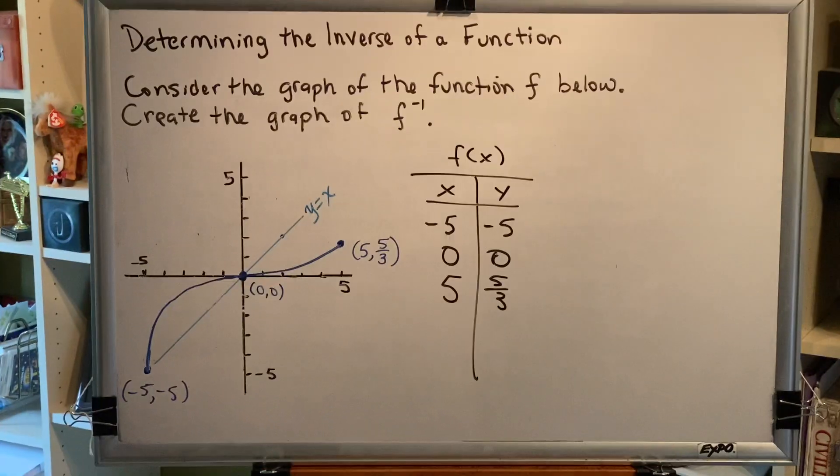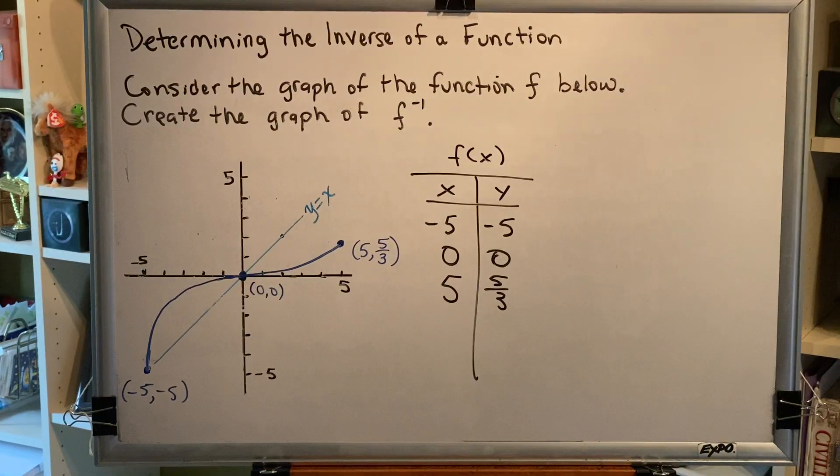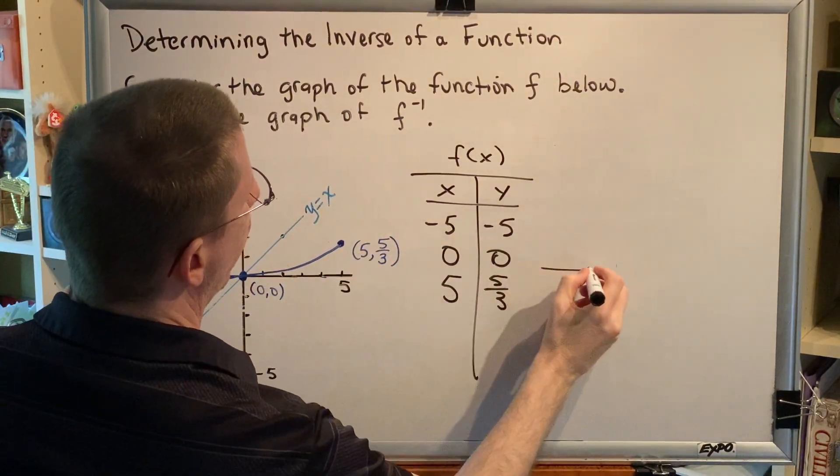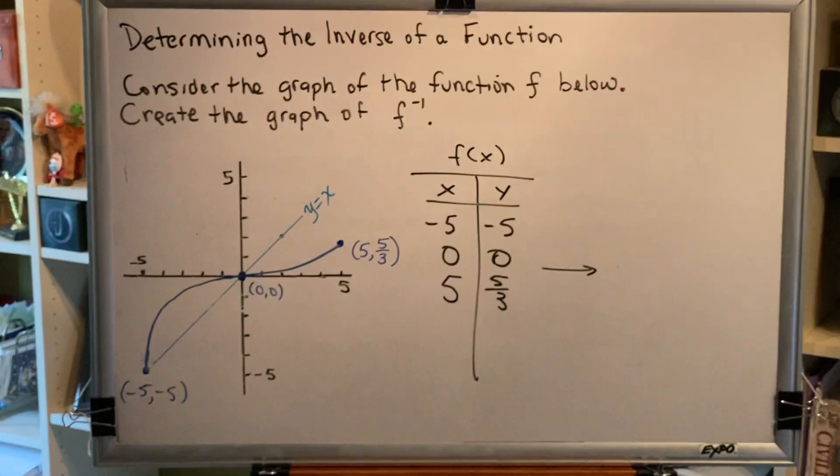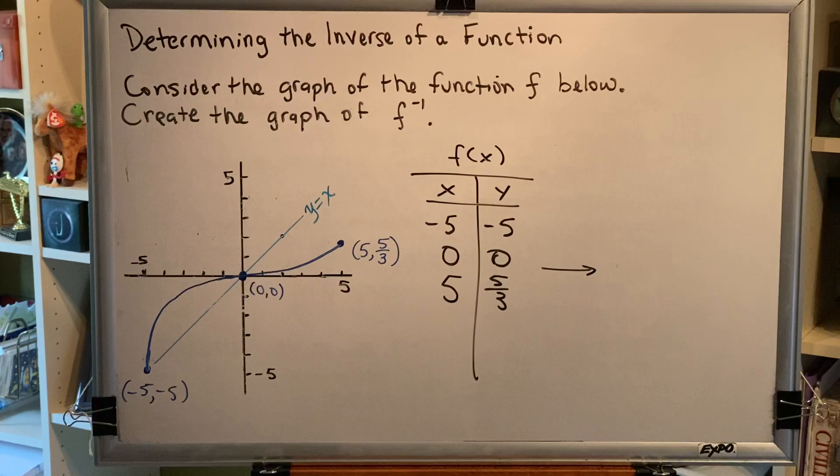This problem is harder than others we've seen for two reasons. One, two of our points don't change when we go from f to f inverse. And the one that does contains a fraction, so we have to know how to graph when fractions are involved.